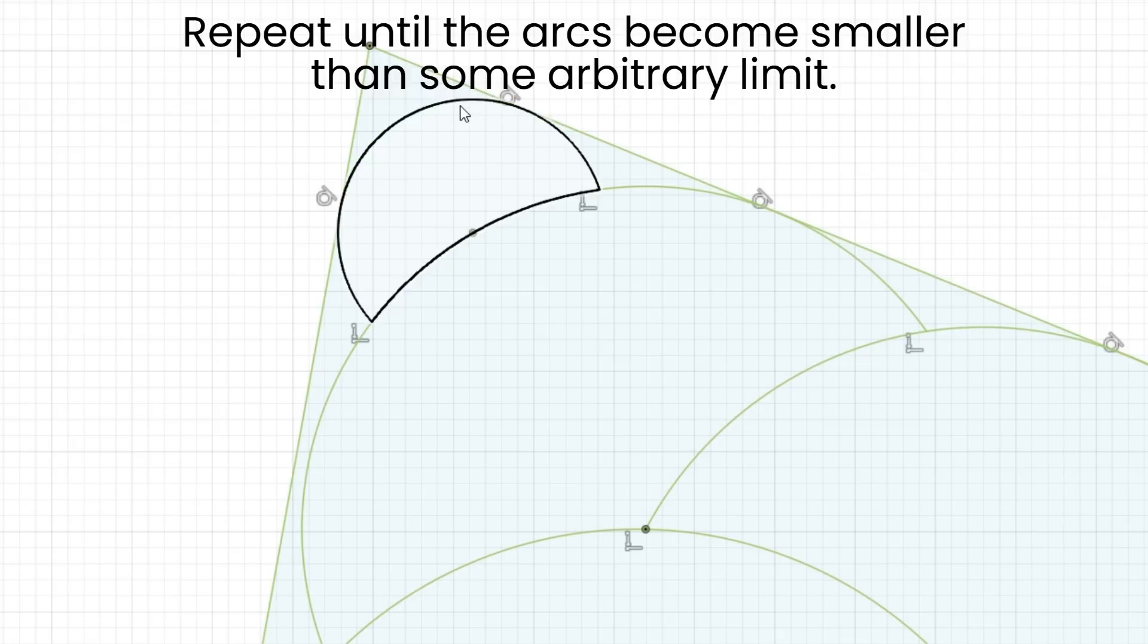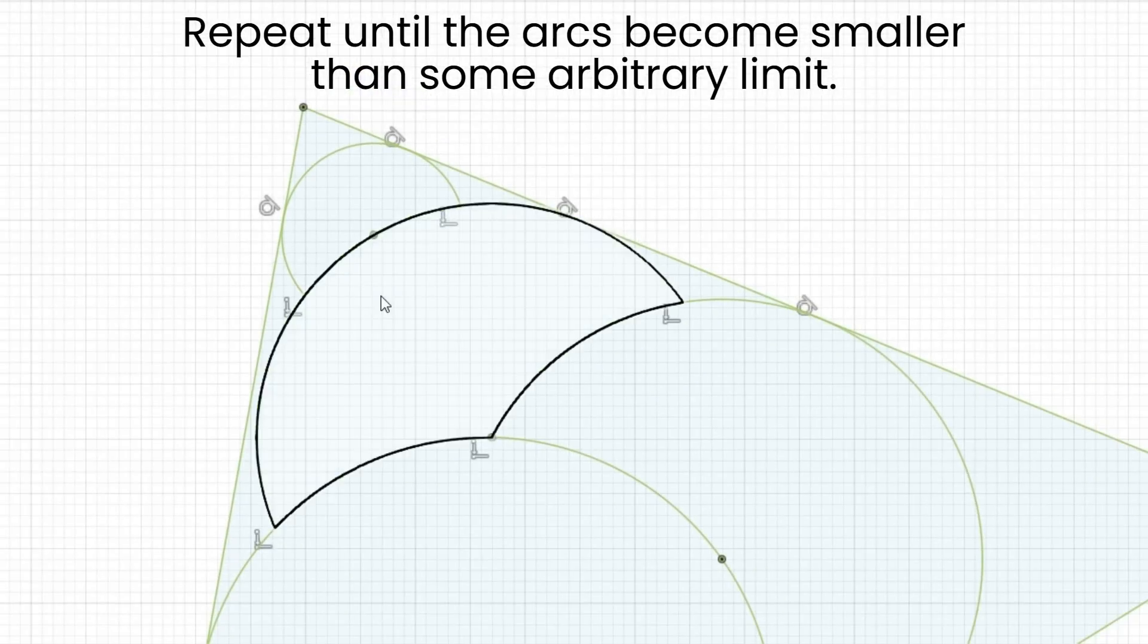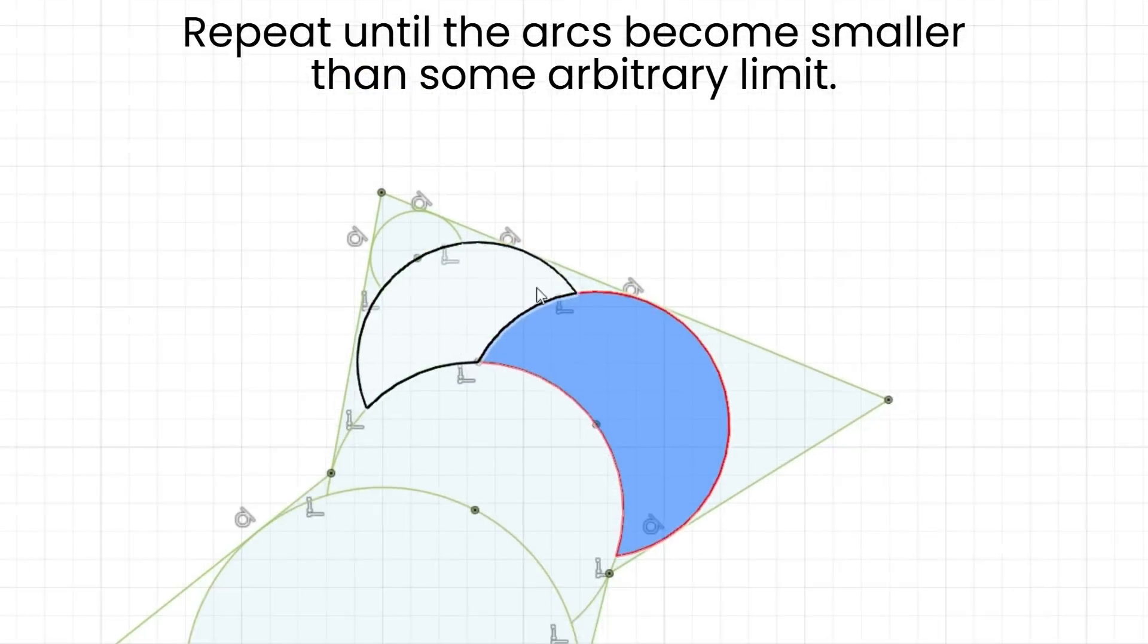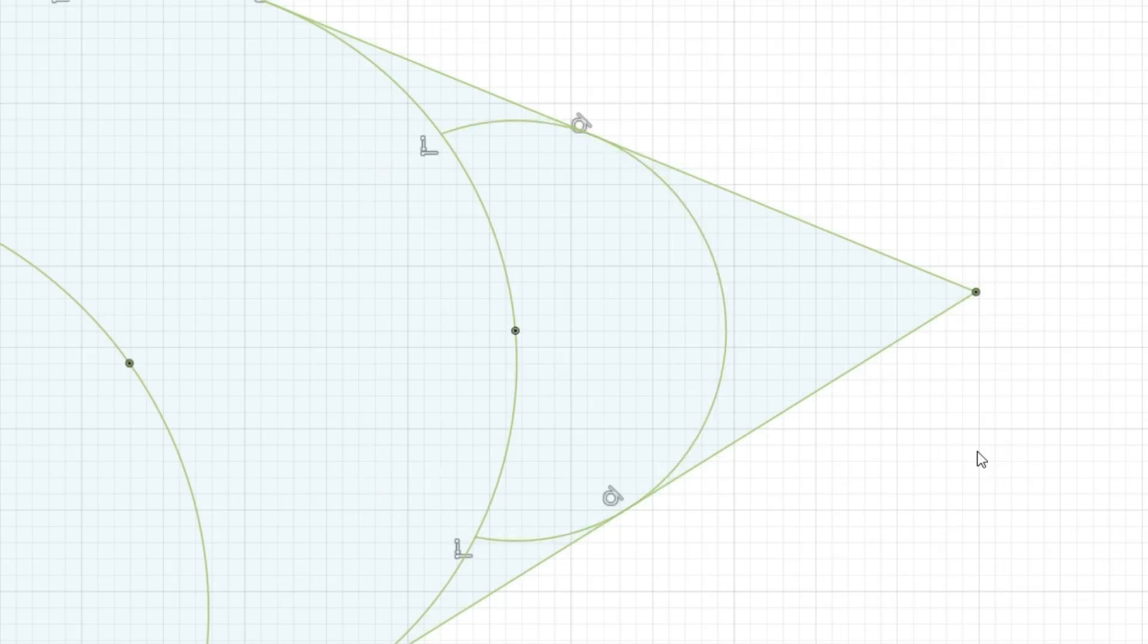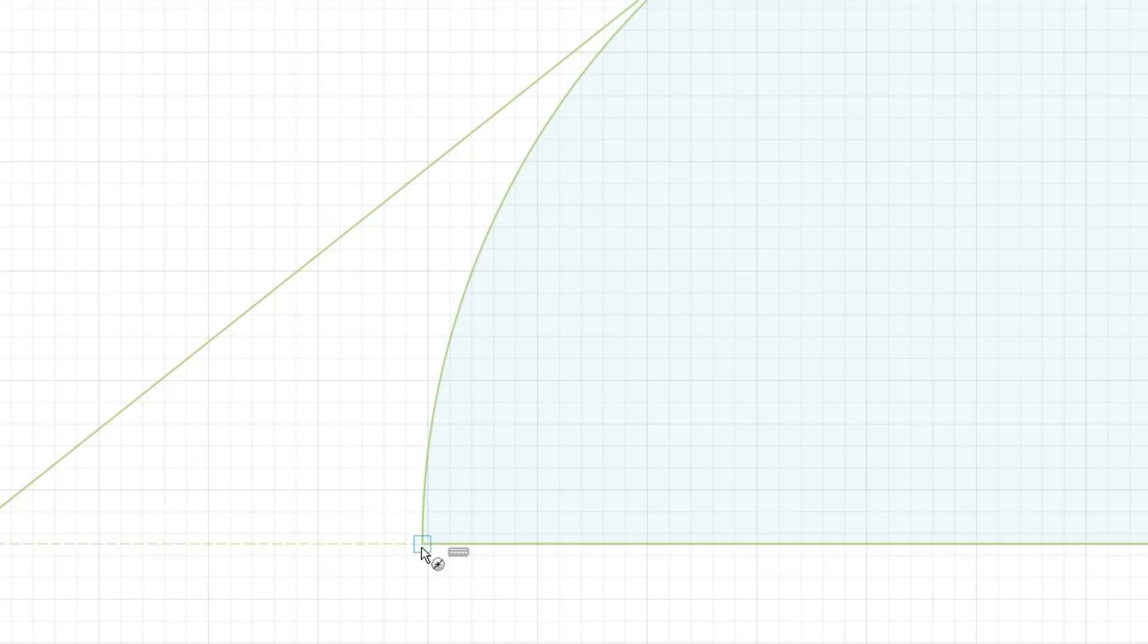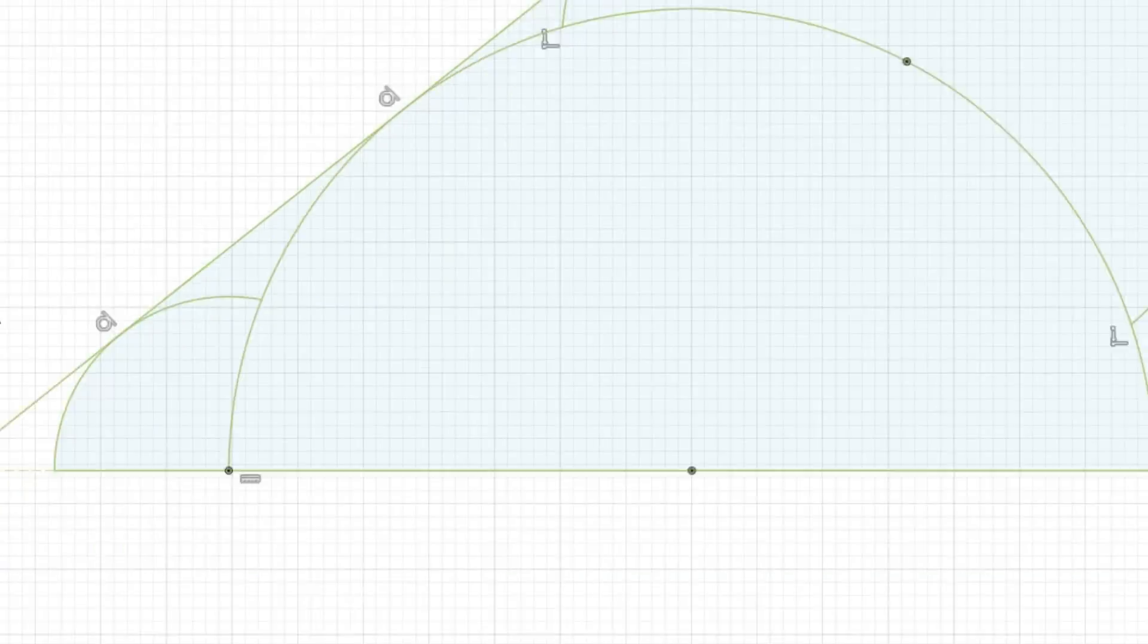At this point we've run out of space, and we need to backtrack until there is an arc with space to start a new branch. This pattern continues until the whole shape is completely filled.